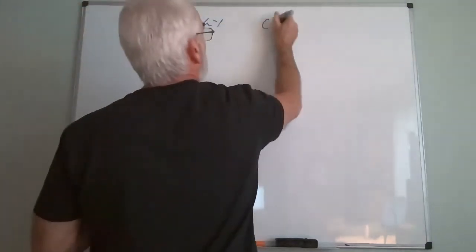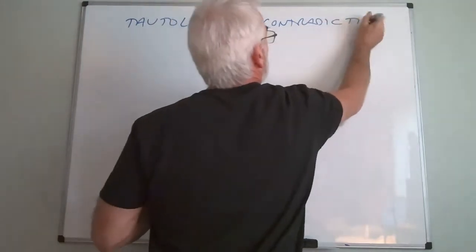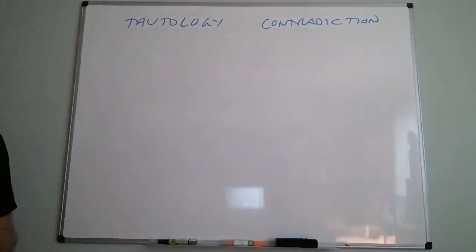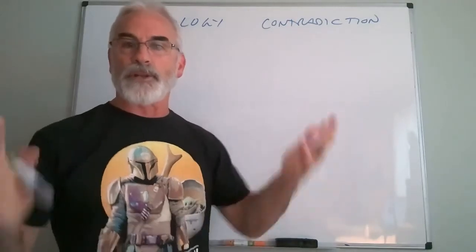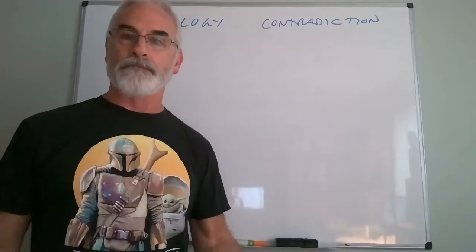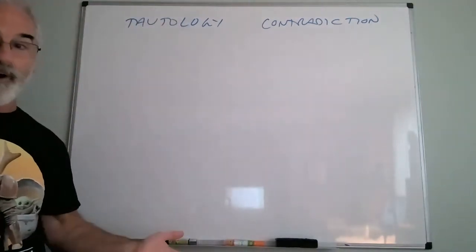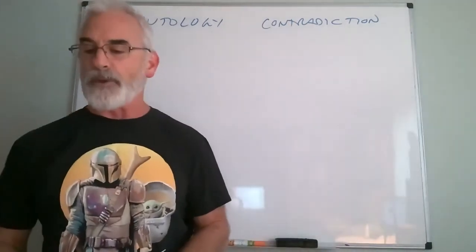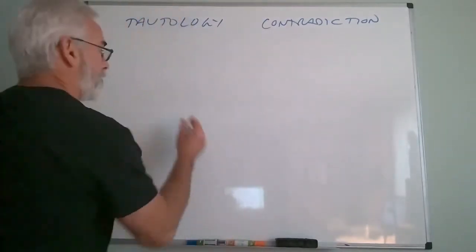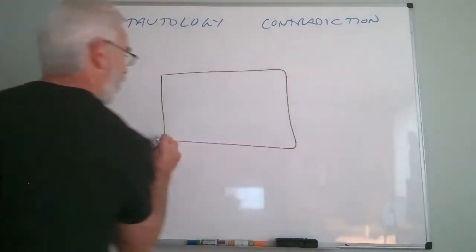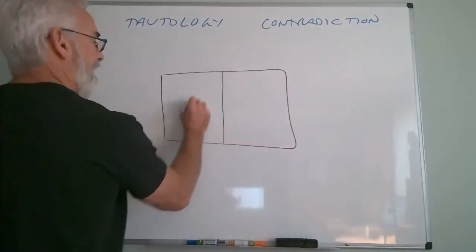We're going to go over some major logic concepts today and continue on with truth tables. I want to talk about two words: tautology and contradiction. These are two terms that go hand in hand — they are antonyms, extreme opposites. A tautology is a statement that is absolutely always true without any exception whatsoever, and a contradiction is a statement that is always false, absolutely, no matter what.